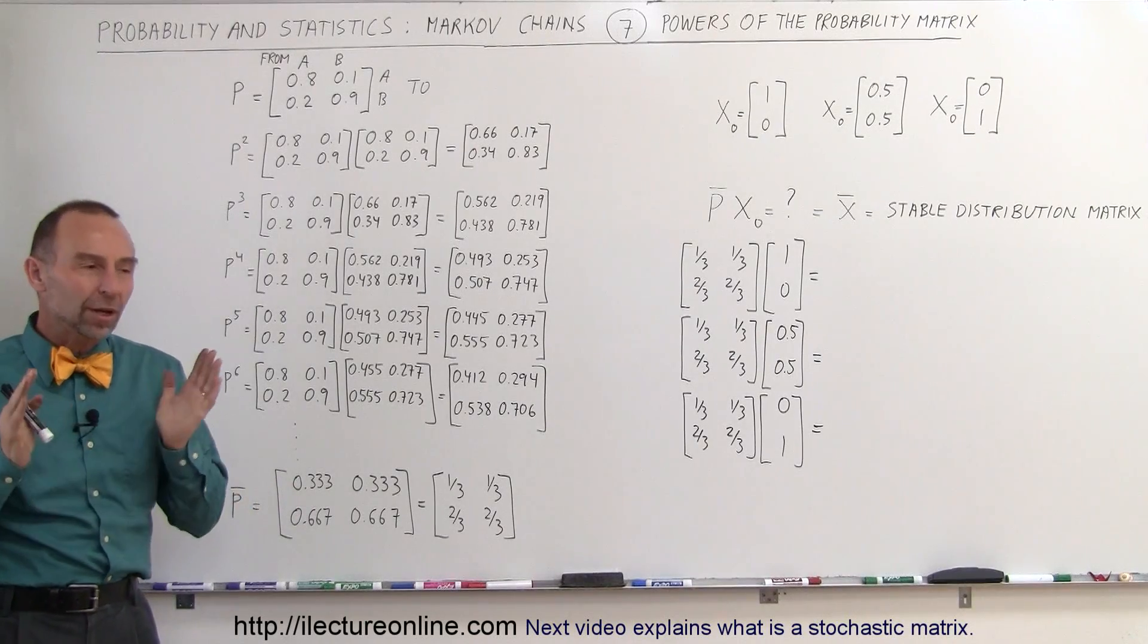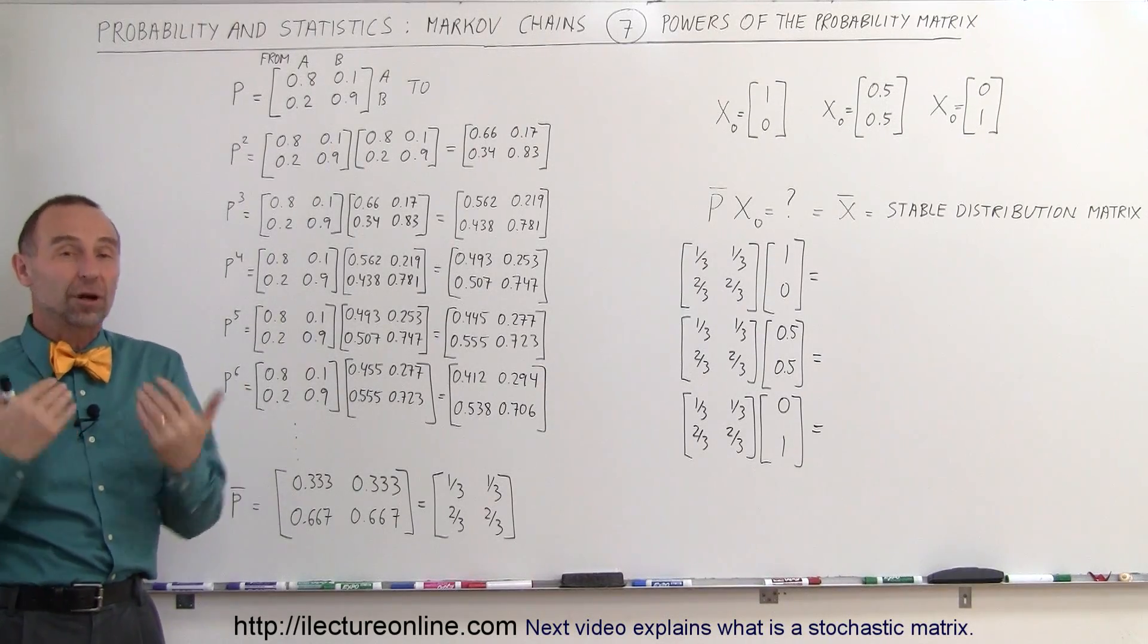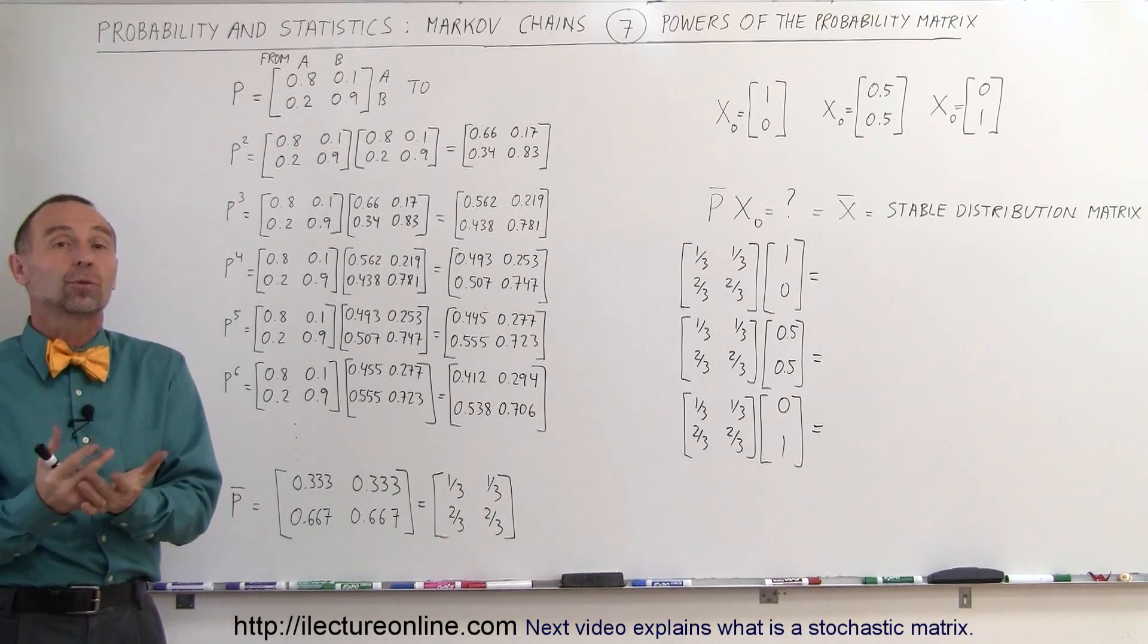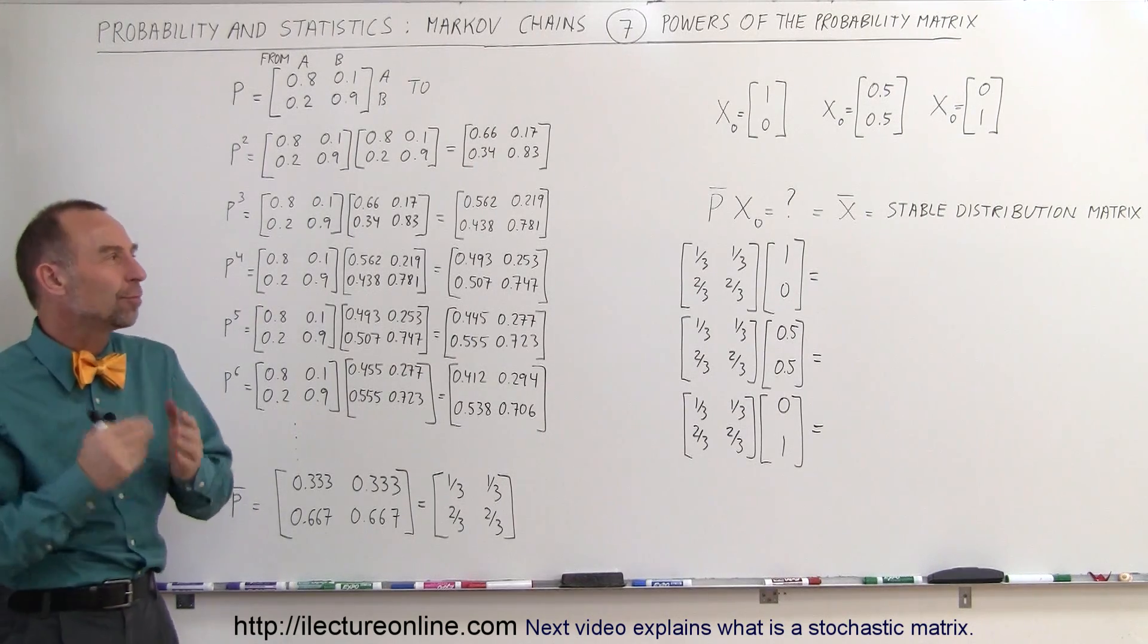Welcome to ElectronLine. Now one of the major reasons why we use Markov chains and one of the major outcomes we're looking for is to find the stable distribution matrix.